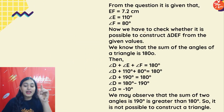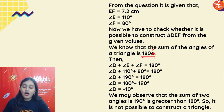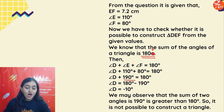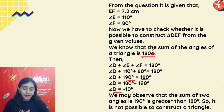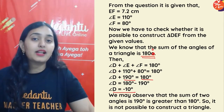Because angle D + angle E + angle F = 110° + 80° = 190°, and 190° is greater than 180°. That means the value of angle D would be negative, which is not possible. So this triangle is not possible.